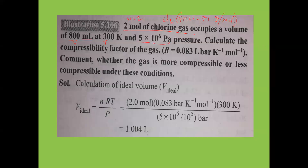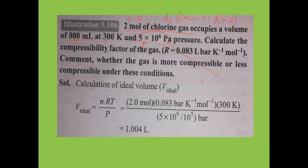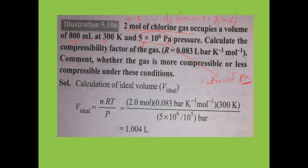Pressure is given in Pascals (MKS units). When pressure is in Pascals, volume should also be in MKS units. We know 1 atm = 10⁵ Pascal, so 1 Pascal = 1/10⁵ atm = 10⁻⁵ atm. We can convert pressure from Pascals to atm or bar by dividing by 10⁵.